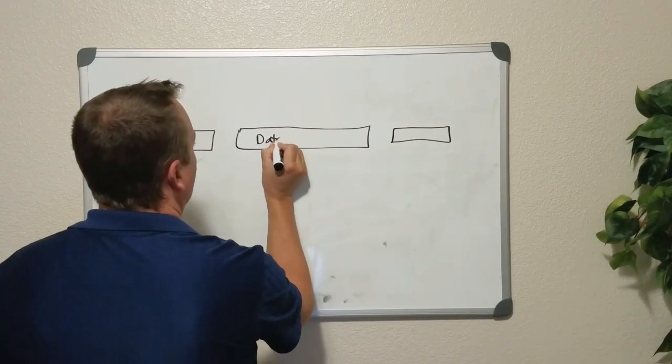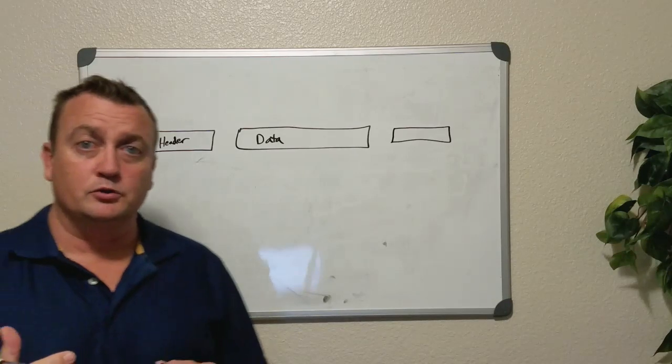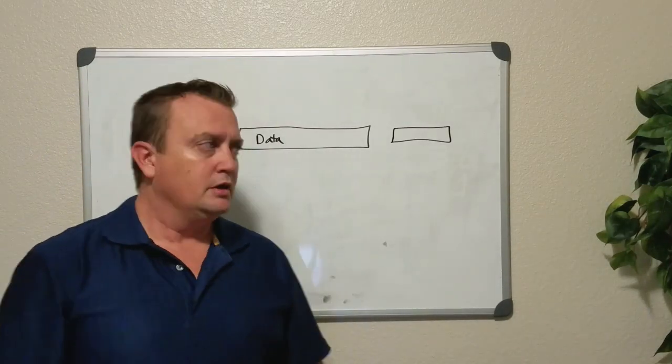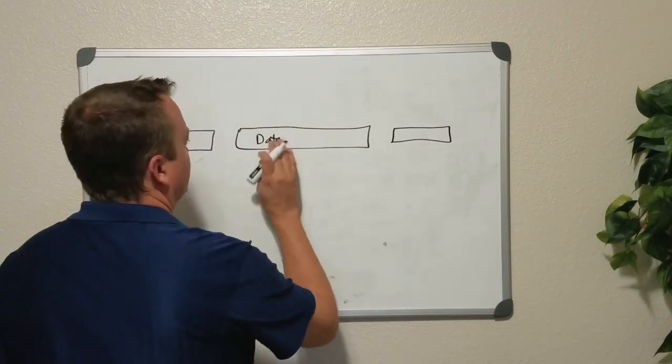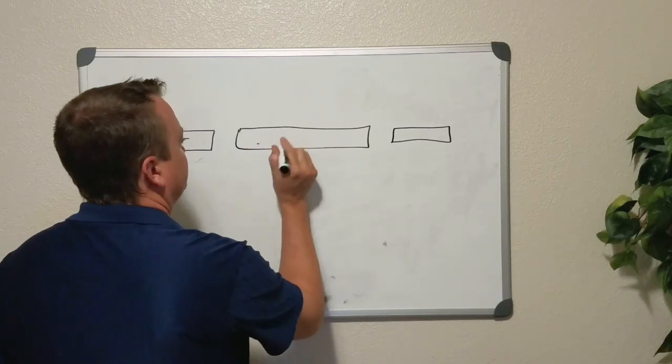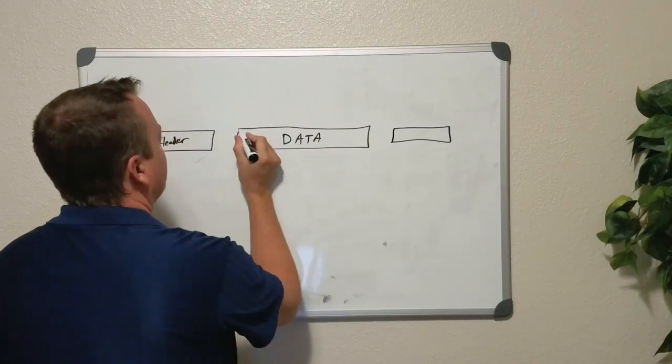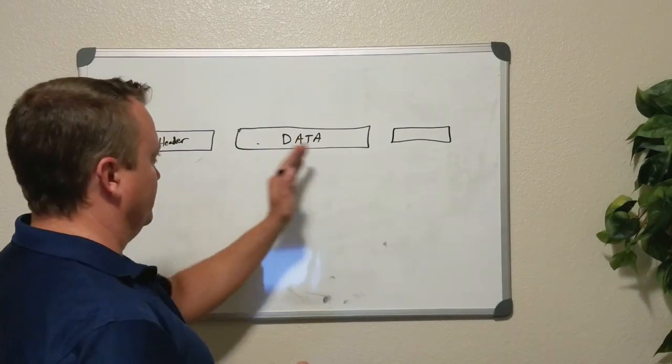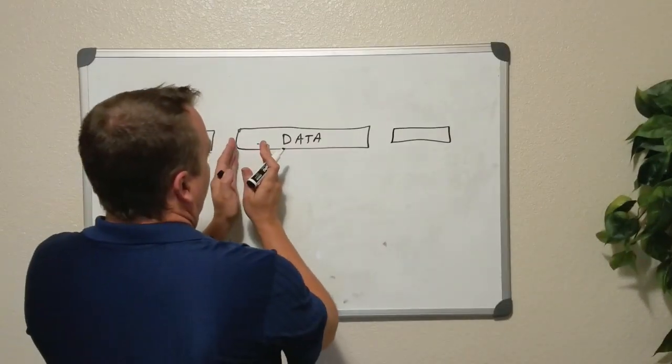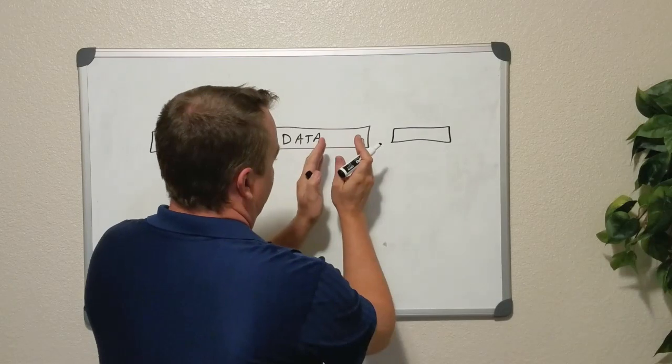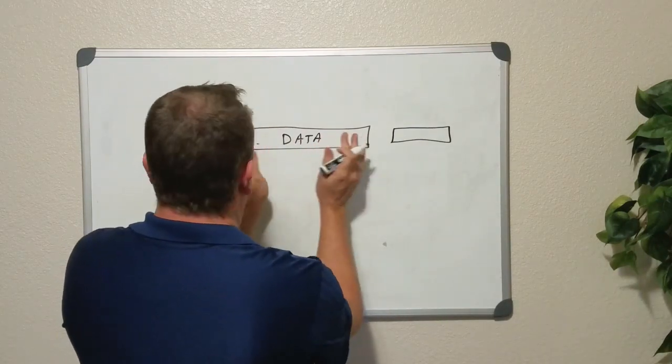We're going to go into more detail on this in the next video, talking about frames. But essentially, you've got your main data in here. And this data can be made up of several things. You can actually have packet headers and trailers inside this data field.